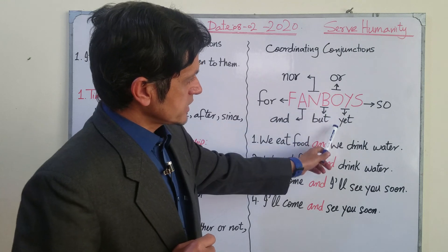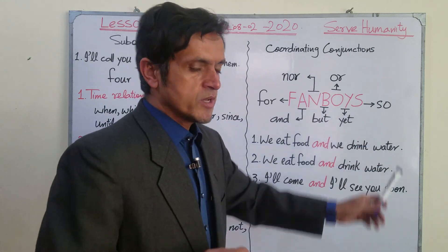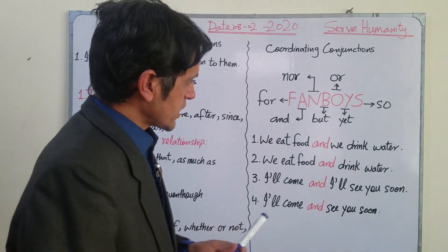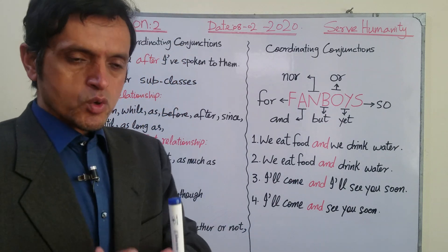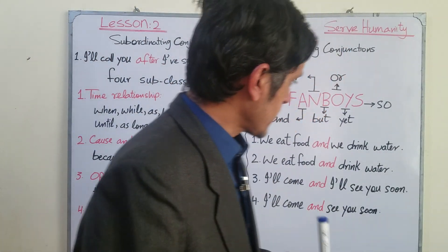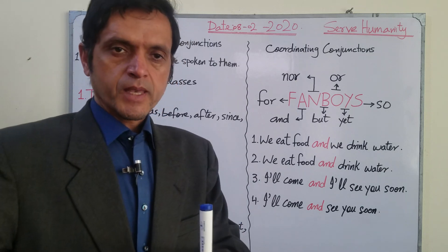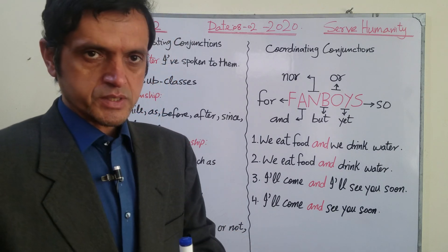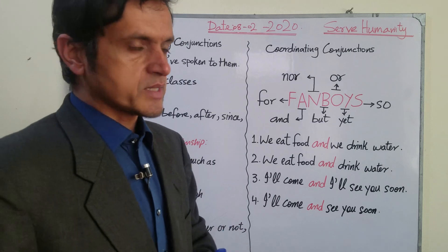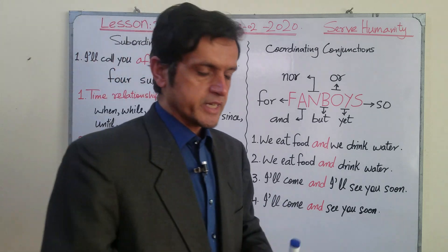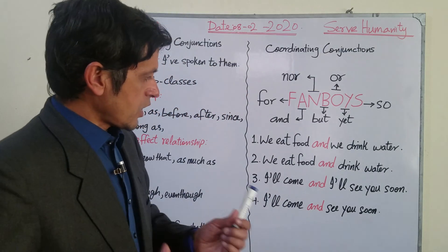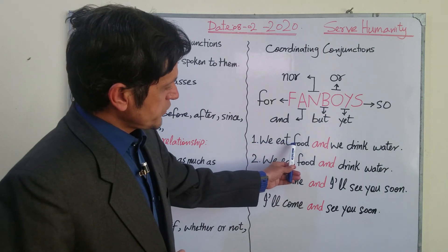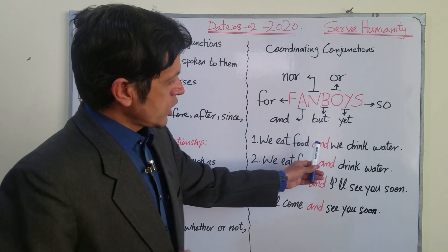So there are seven coordinating conjunctions: for, and, nor, but, or, yet, so. Coordinating conjunctions connect two independent clauses. Look at example number one: 'We eat food' and 'we drink water' — these two independent clauses are connected by a coordinating conjunction.